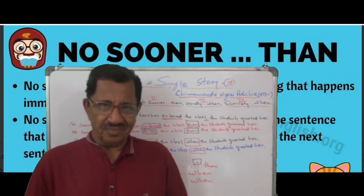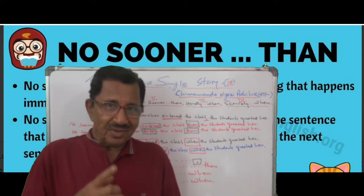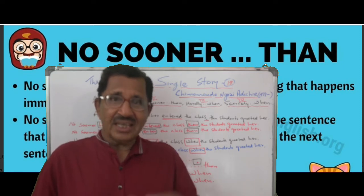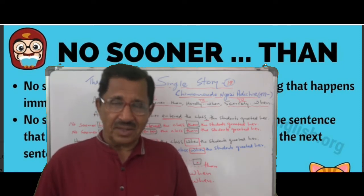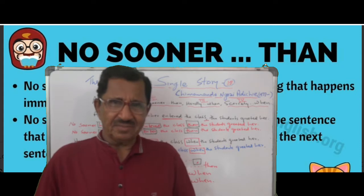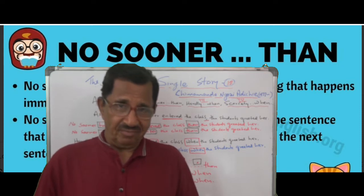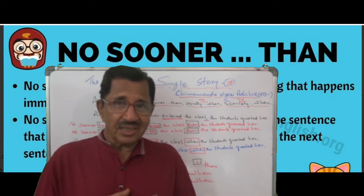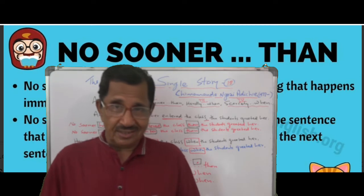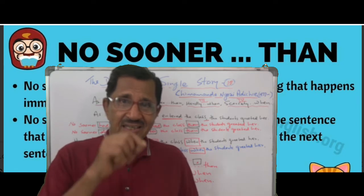That means it is clear. When you have two actions in the past — you remember when you did past perfect tense — the first action should be in the past perfect tense and the second should be in the simple past. Now hear the same thing. When you start with 'as soon as,' the sentence is positive. Sometimes you will get a question: 'As soon as I saw him, I saluted him. Rewrite in the negative without changing the meaning.'